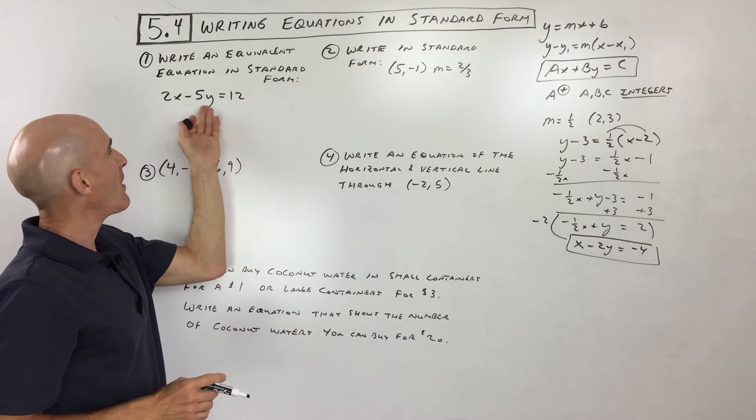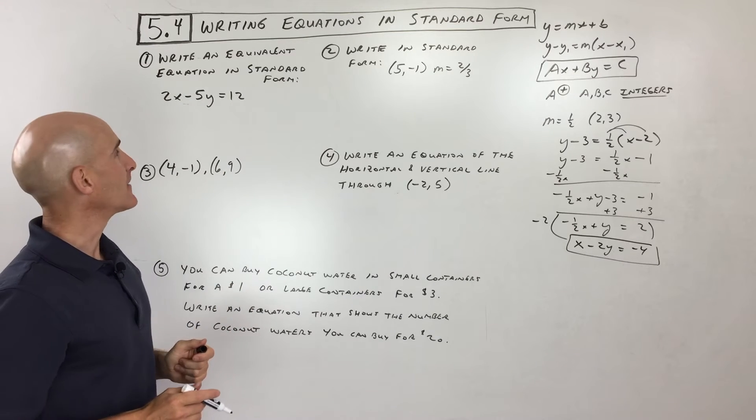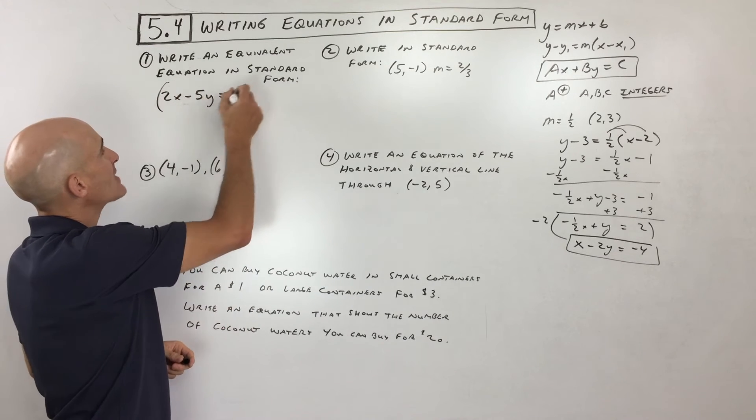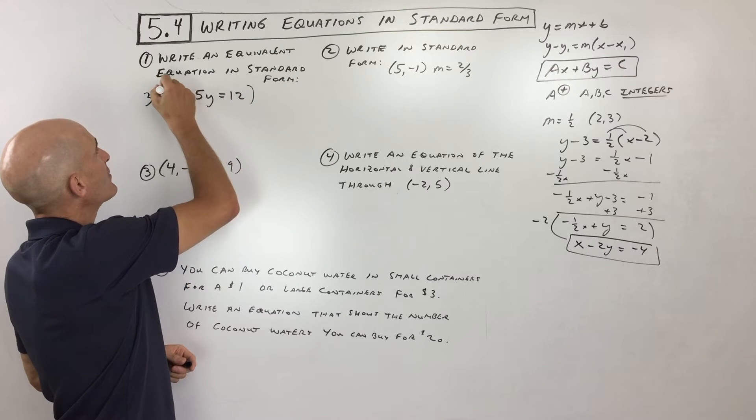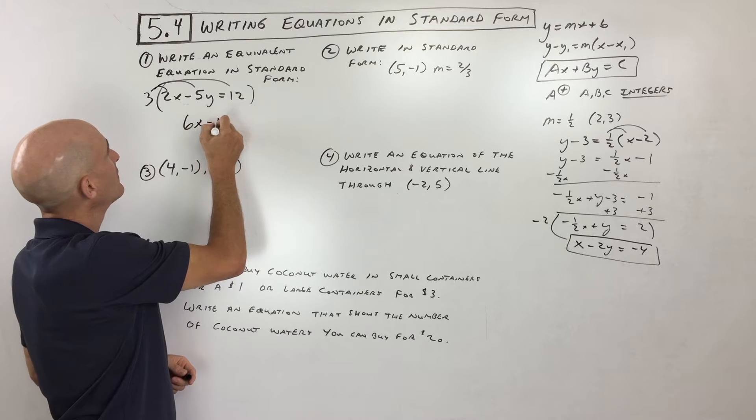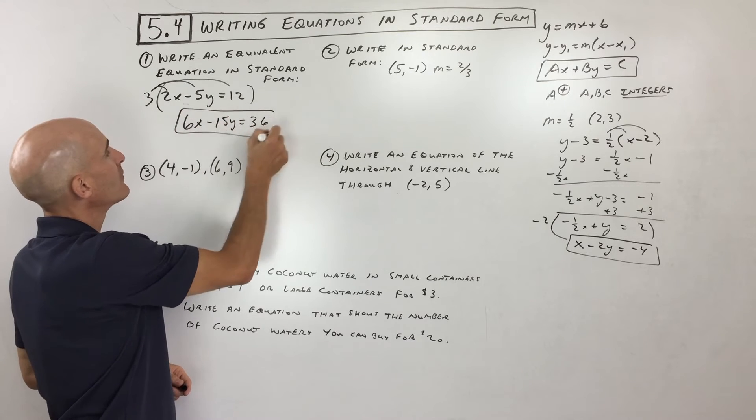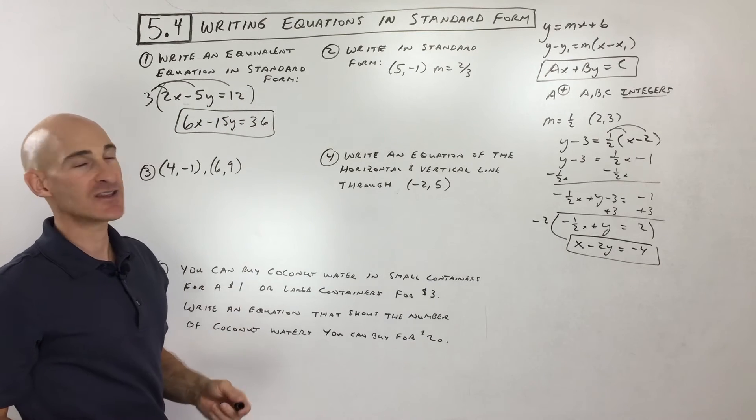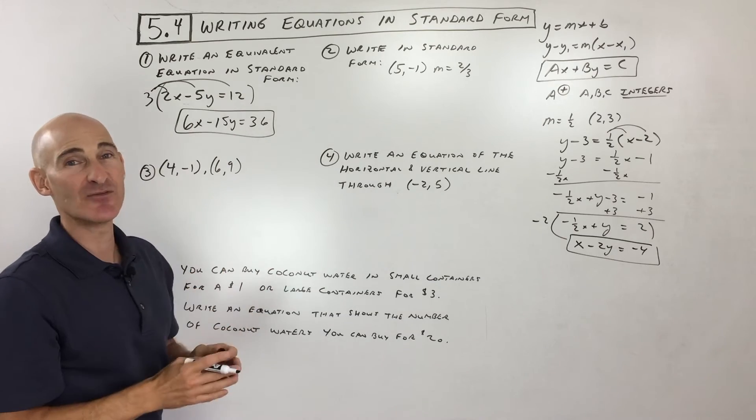So write an equivalent equation in standard form. So what do you think? What would be another possible way of writing the equation of this line? Well, there's an infinite number of possibilities. As long as we multiply everything by the same number, I'm going to multiply by 3, we get an equivalent form of the line. So if we were to graph this, it would be the exact same line.